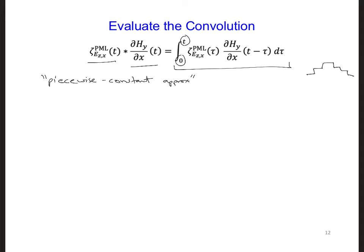Using this approximation, which is basically like a staircase approximation, we can write that this is going to be approximately equal to the summation. I'm going to introduce m as our summation integral from zero to n minus one. So basically over all time steps that we're starting from zero, so that's why it's to n minus one. Zeta ez x PML m, and d hy d x n minus m.